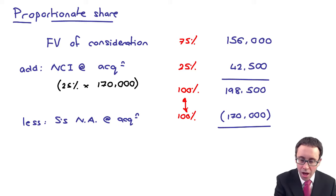Under the fair value method, goodwill is $38,000, compared to $28,500 under the proportionate share method. So there are two different goodwill figures in your group statement of financial position depending on which method you choose to measure the non-controlling interest. If you use proportionate share, goodwill is lower; if you use fair value, it's higher. That higher goodwill figure is balanced out by a higher non-controlling interest figure within equity.